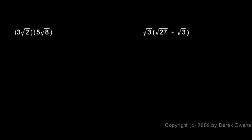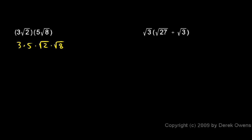In this example, I have two things multiplied together: 3 times the square root of 2 times 5 times the square root of 8. Well, each of these consists of two things multiplied together, so I really have four things multiplied together, and I can rearrange them. I can write this as 3 times 5 times the square root of 2 times the square root of 8.